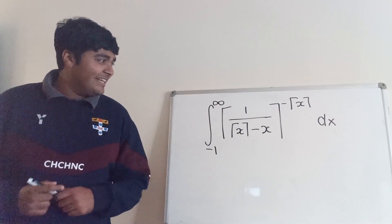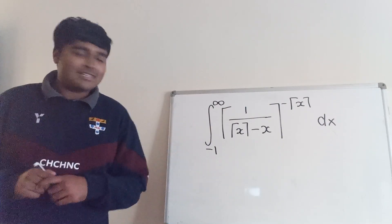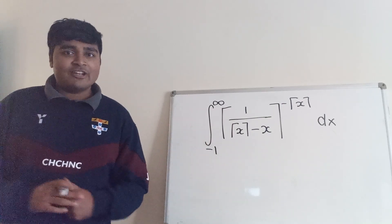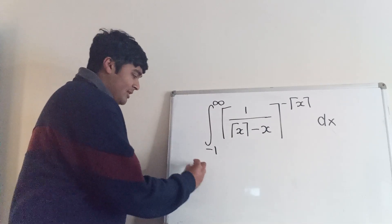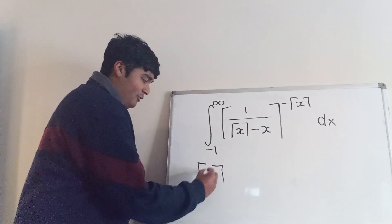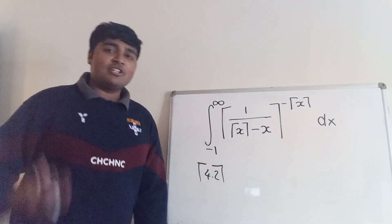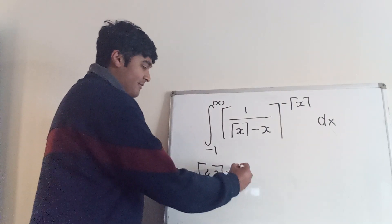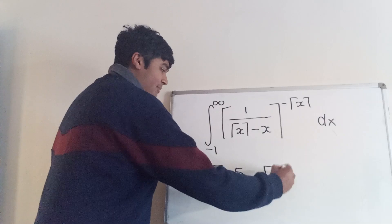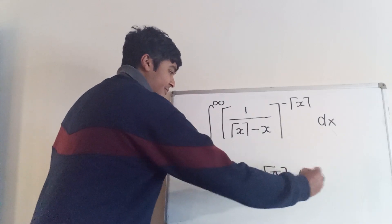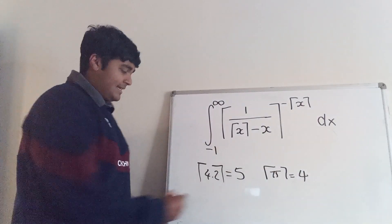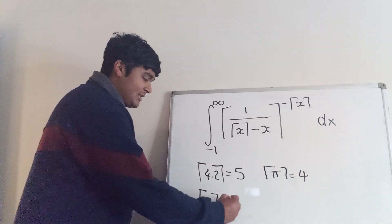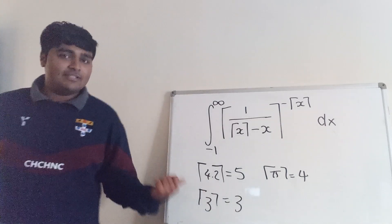So a lot of ceiling functions going on in here. For anyone that's not seen the ceiling function before, it basically gives you the smallest integer bigger than or equal to your input. For example, the ceiling of 4.2 is the smallest integer bigger than or equal to 4.2, so that's going to be 5. The ceiling of pi is going to be 4, so you're basically rounding up to the next integer. And the ceiling of an integer is just going to be that integer.